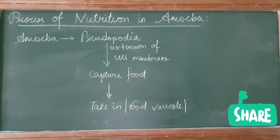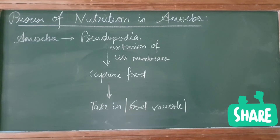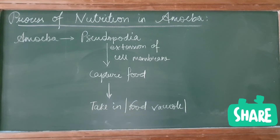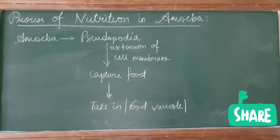The first step is when Amoeba sees the food particles, there is an extension of cell membrane which is Pseudopodia. Then it captures the food and the food is taken into the food vacuole.